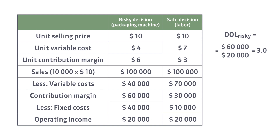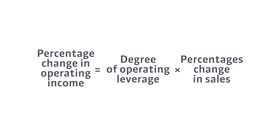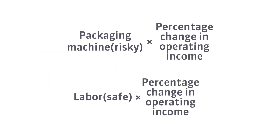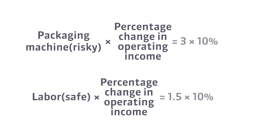The operating income is the same for both decisions. The degree of operating leverage for the packaging machine — the risky decision — is 3, and for the labor option — the safe decision — is 1.5. This means that operating income will grow three times as fast as sales in the case of the risky decision, and only 1.5 times as fast in the case of the safe decision. Let's see what happens if sales increase by 10%.